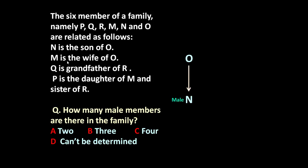Second statement is M is wife of O. O is here and M is wife, means O plus M. M is wife means M is a female member. Obviously, O is a male member. So let us indicate here O and M, it is a married couple.